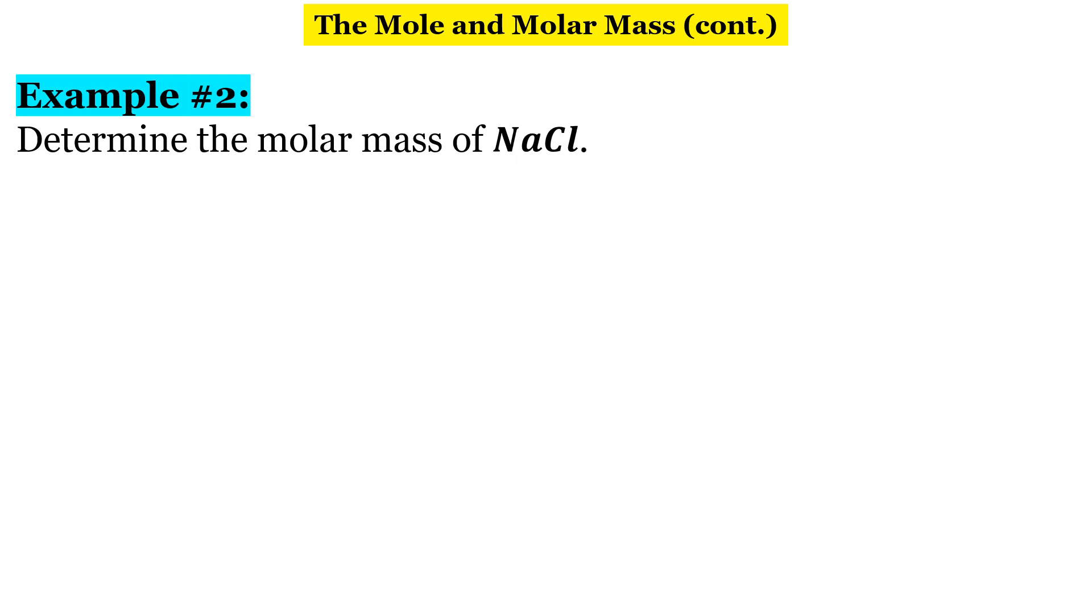So, what we're going to do here is we're going to look both of these up individually. So, if you go to the periodic table and you look up sodium's mass, it is 22.99 grams per mole. Chlorine, Cl, if we look up its mass, it is 35.45 grams per mole.